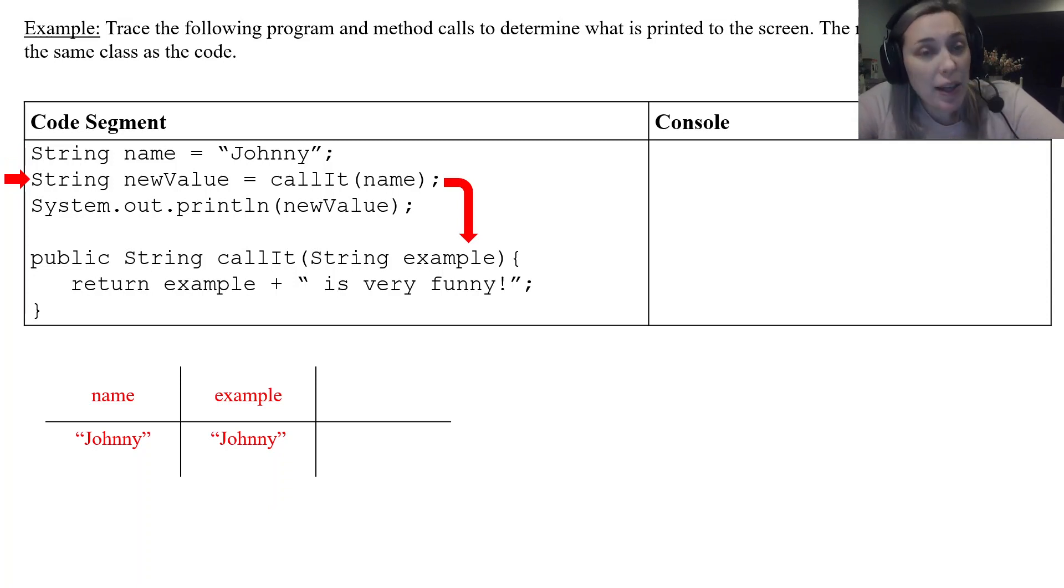String new value equals call it name. So here we have a method call. Okay call it name meaning that I'm going to go down to the method call it and I'm going to pass it the word name. Okay right now name is Johnny. So Johnny is going to get past this method. So that means the variable example is going to be Johnny. It's going to have the value Johnny. Okay so both name and Johnny both name and example are Johnny.